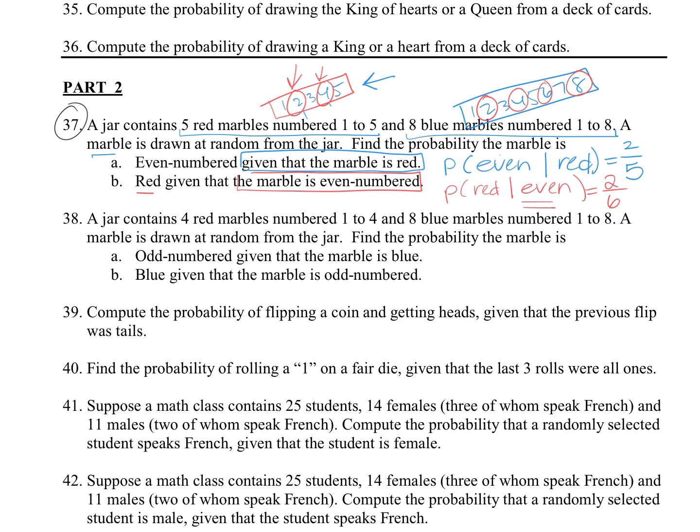So you can see how the conditional probability, it kind of puts us to a smaller sample space compared to the whole entire set.